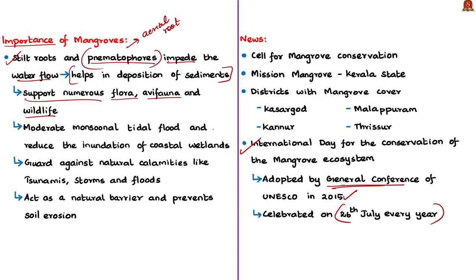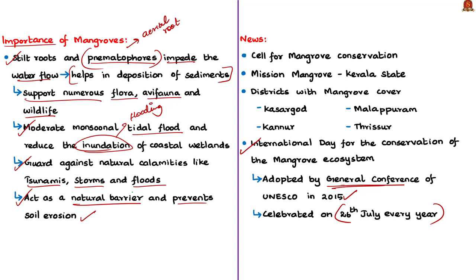Mangroves moderate monsoonal tidal floods and reduce the inundation or flooding of coastal lowlands. They also guard against natural calamities like tsunamis, storms and floods. Very importantly, mangroves act as a natural barrier and prevent coastal soil erosion. Mangroves are therefore a much better and cost-effective option than sea walls in protecting the state's coastline.